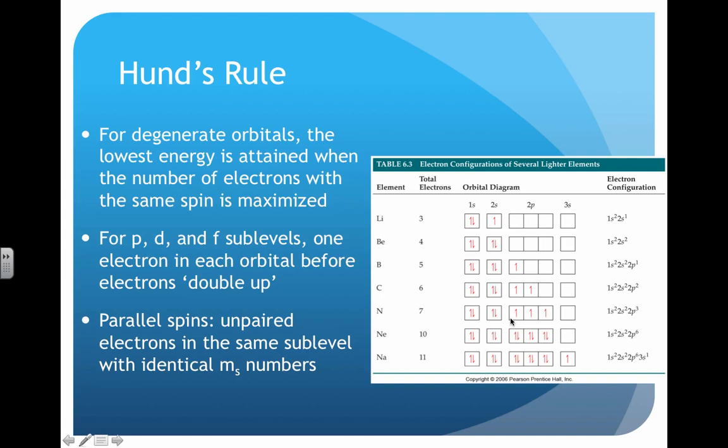But you don't see them in the electron configuration shorthand version because you only see the numbers, not the actual arrows. That's one of the differences between the way these are expressed.